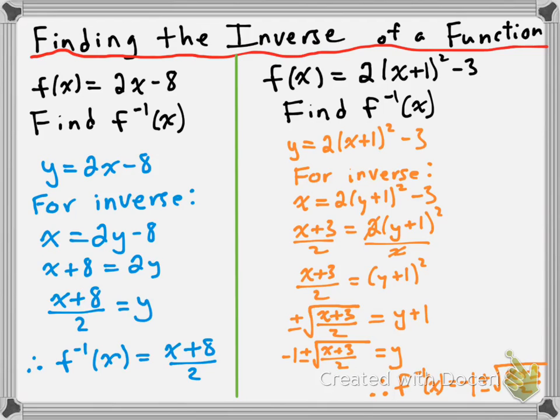Now that y has been isolated, switch back to f inverse of x notation, giving f inverse of x equals negative 1 plus or minus the square root of x plus 3 divided by 2. So this is the method to find an inverse: switch to x, y notation; switch the x and y values to swap the domain and range; re-isolate for y; then put it back into function notation. We'll practice some of these tomorrow. I hope this has been useful to you. Take care.